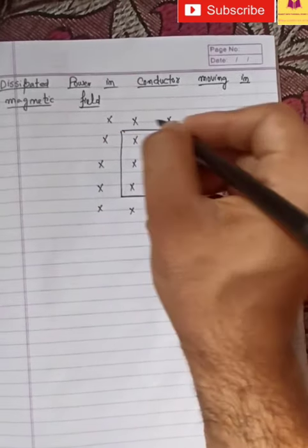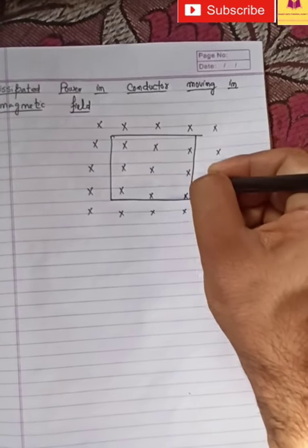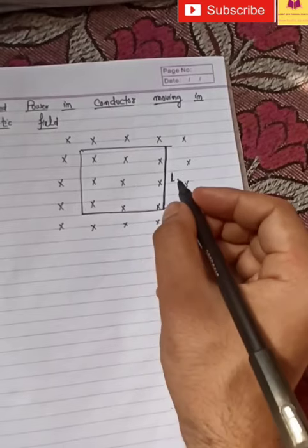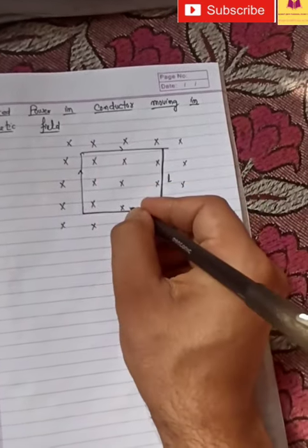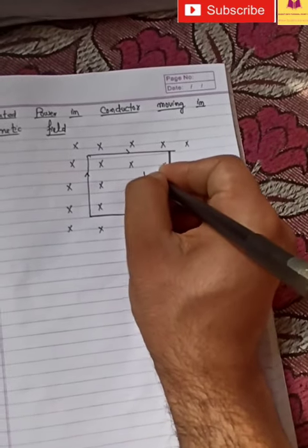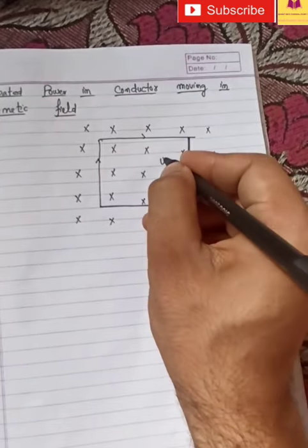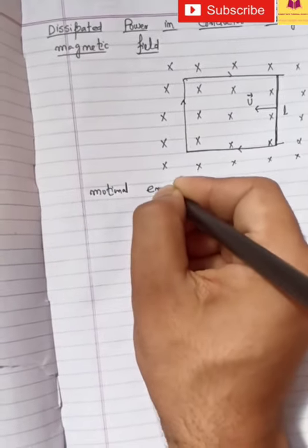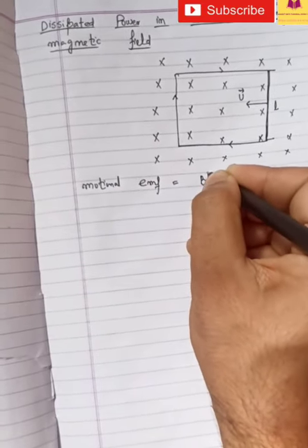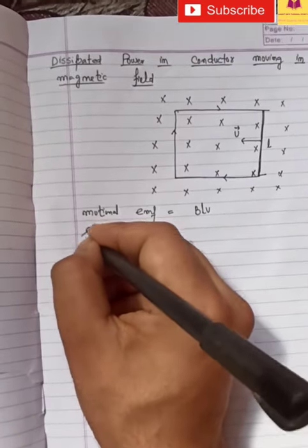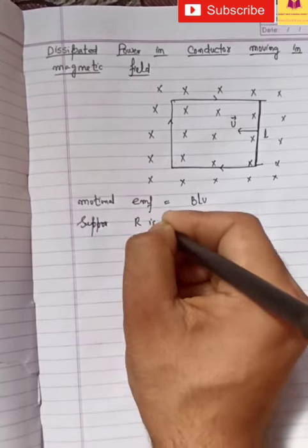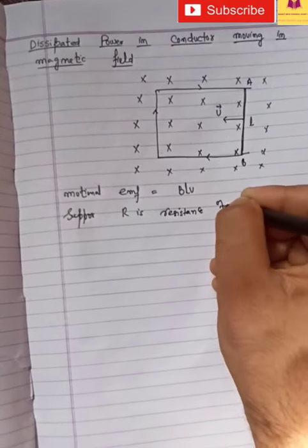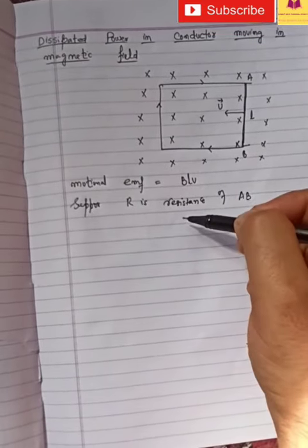This is a conductor. There is a side which can be moved smoothly. This side, for example, has length L and there is a current which will be induced like this. Here we have the velocity of the conductor in this direction. So now what will happen? The motional EMF will be induced. So motional EMF will be BLV, which we did in the previous lecture. Suppose R is the resistance, say for example this is arm AB.